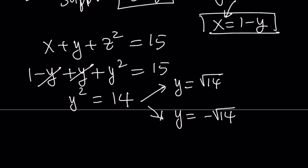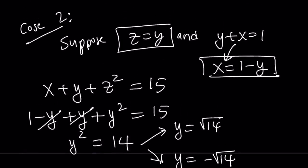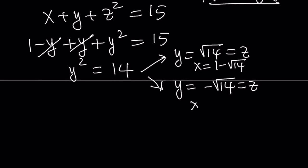Now, let's get back to the other conditions. In case 2, we said that z is equal to y. But what about x value? x is 1 minus y. So, if y is equal to square root of 14, x is going to be 1 minus square root of 14. And if y is equal to negative square root of 14, x is going to be 1 plus square root of 14.